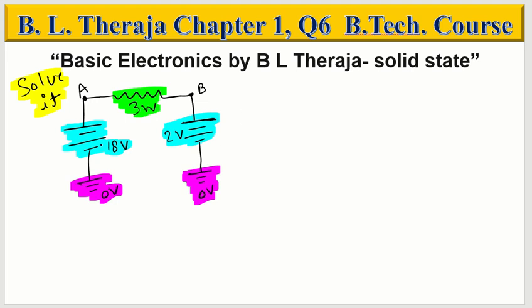The element given is a battery and the resistance power is 3W. The batteries are connected with A and B points. They are grounded at 0V and 0V, so these two are the same potential. Because this is 18V and this is 2V, so the potential of point A is 18V and the potential of point B is 2V.